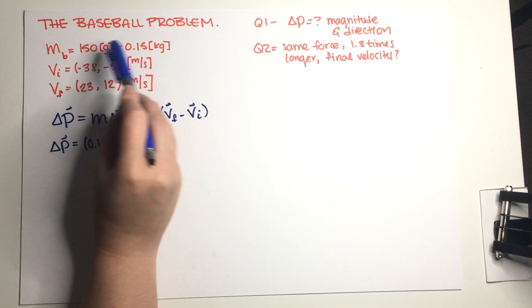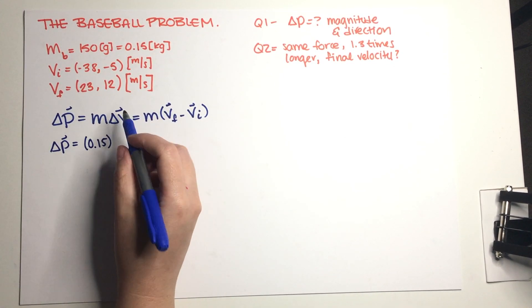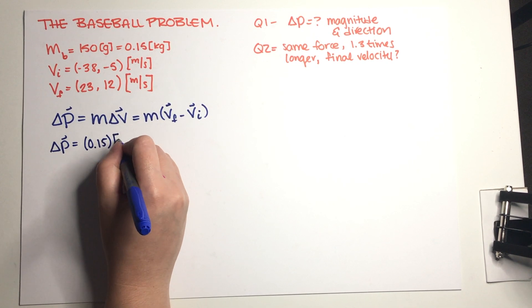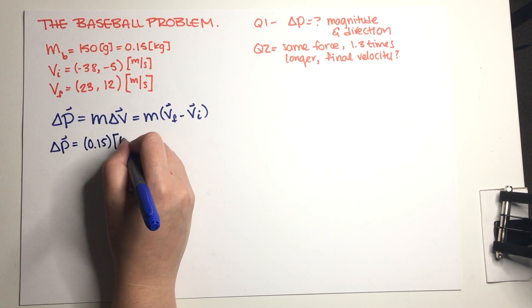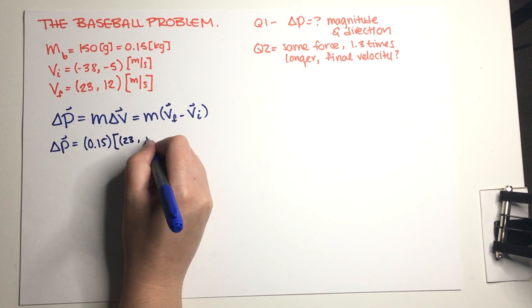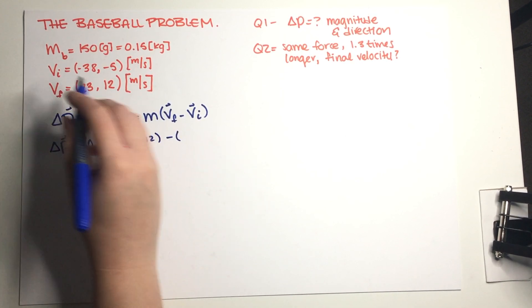This is 0.15 kilograms which I changed to SI units, and this is final is (23, 12) minus initial is (-38, -5).